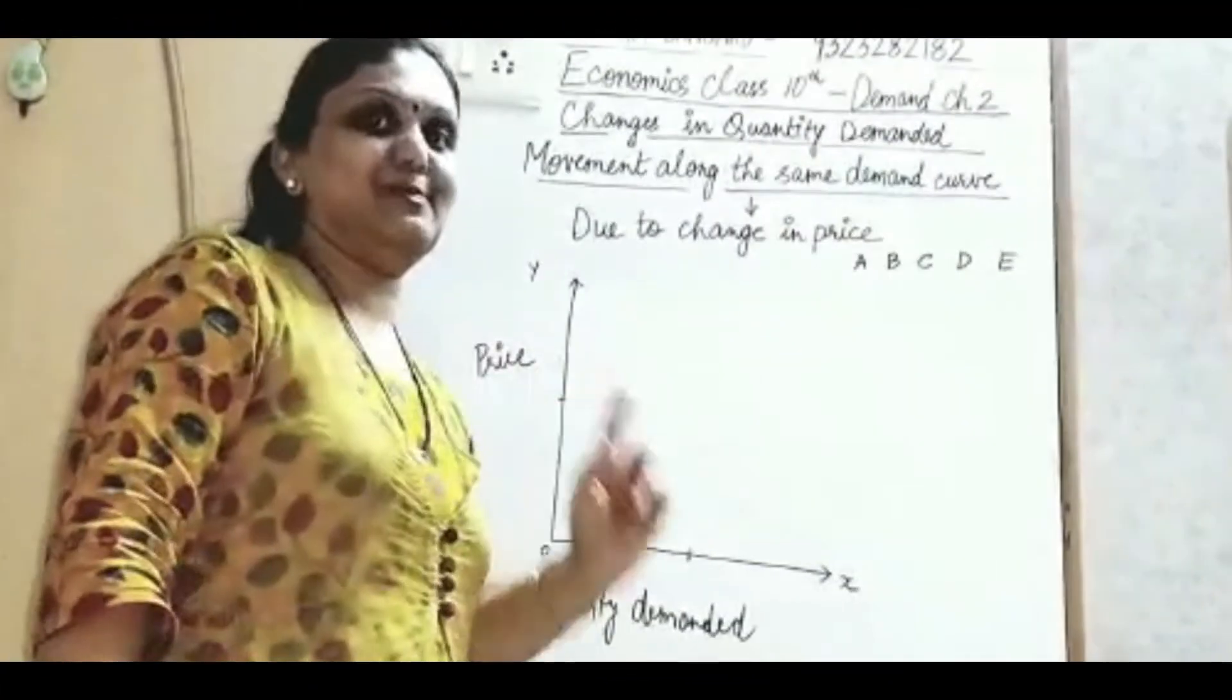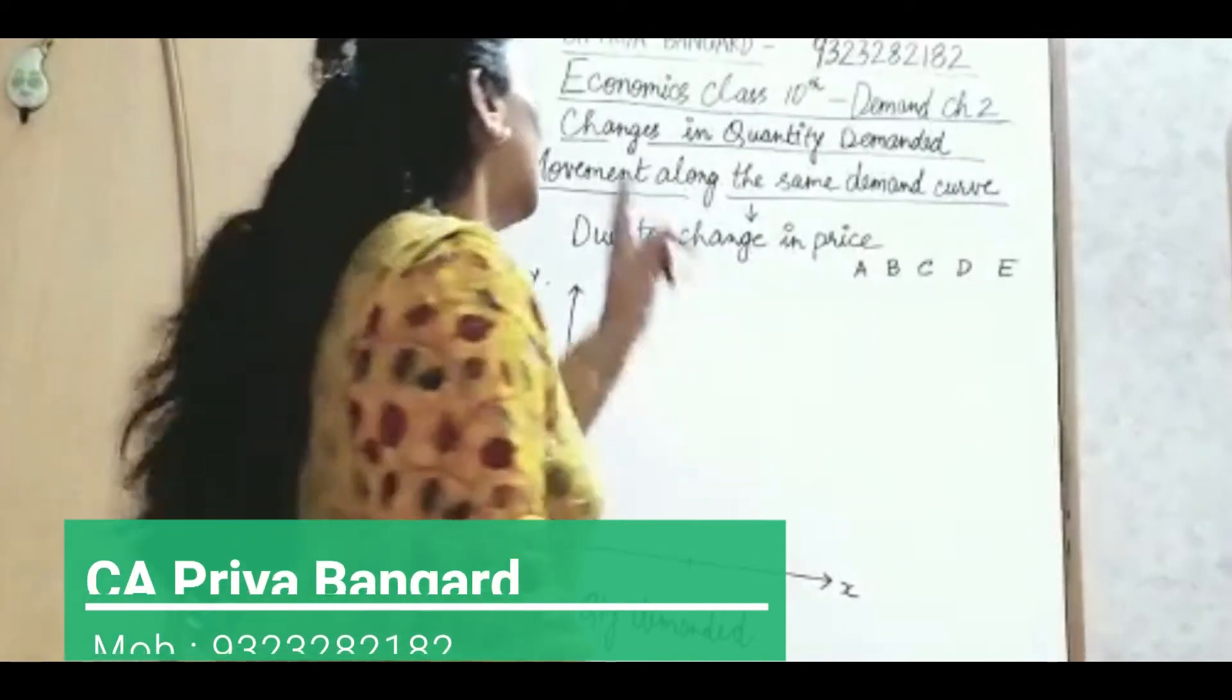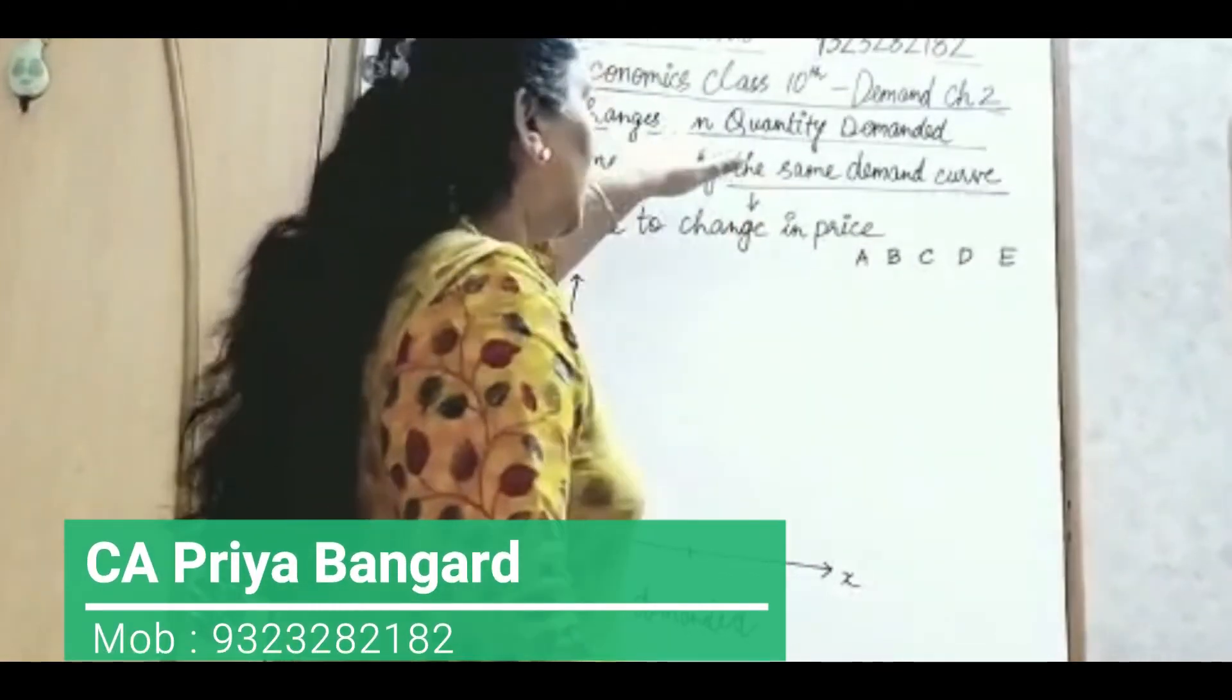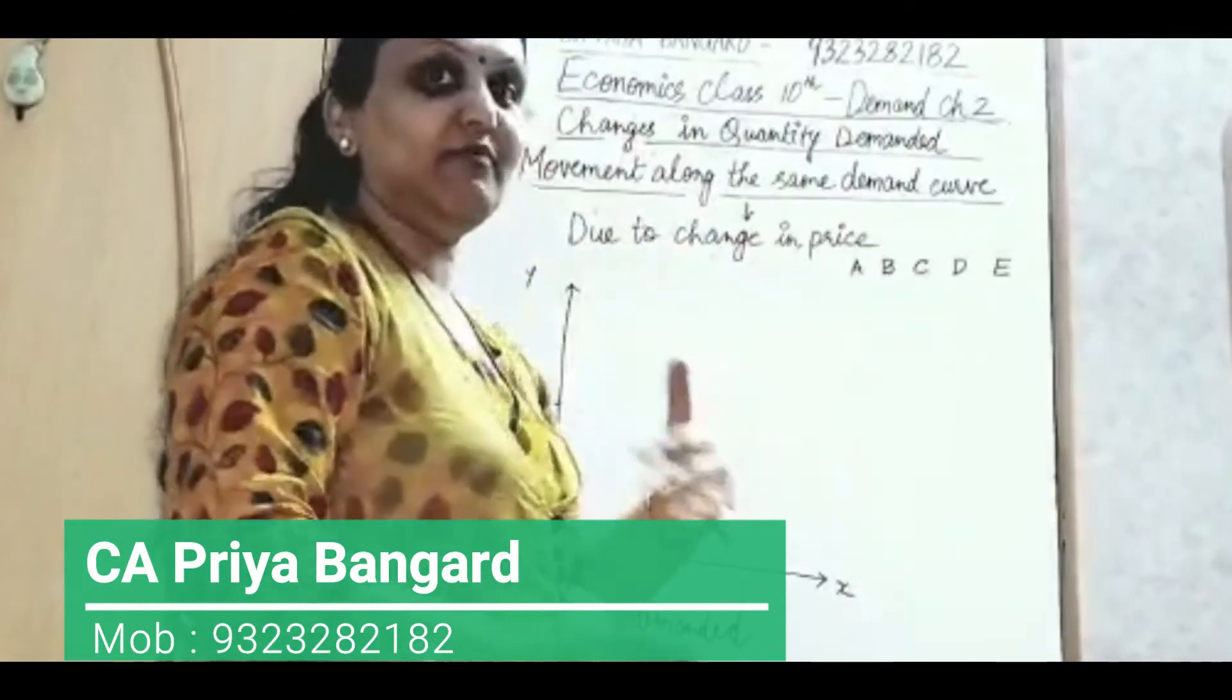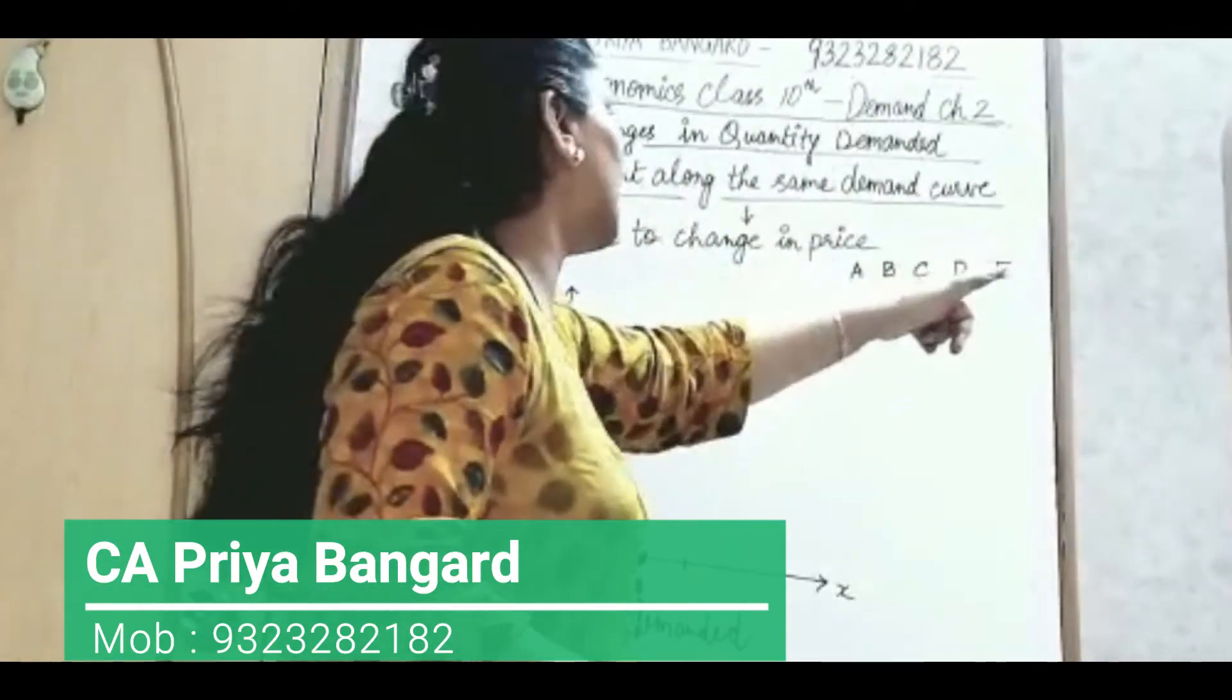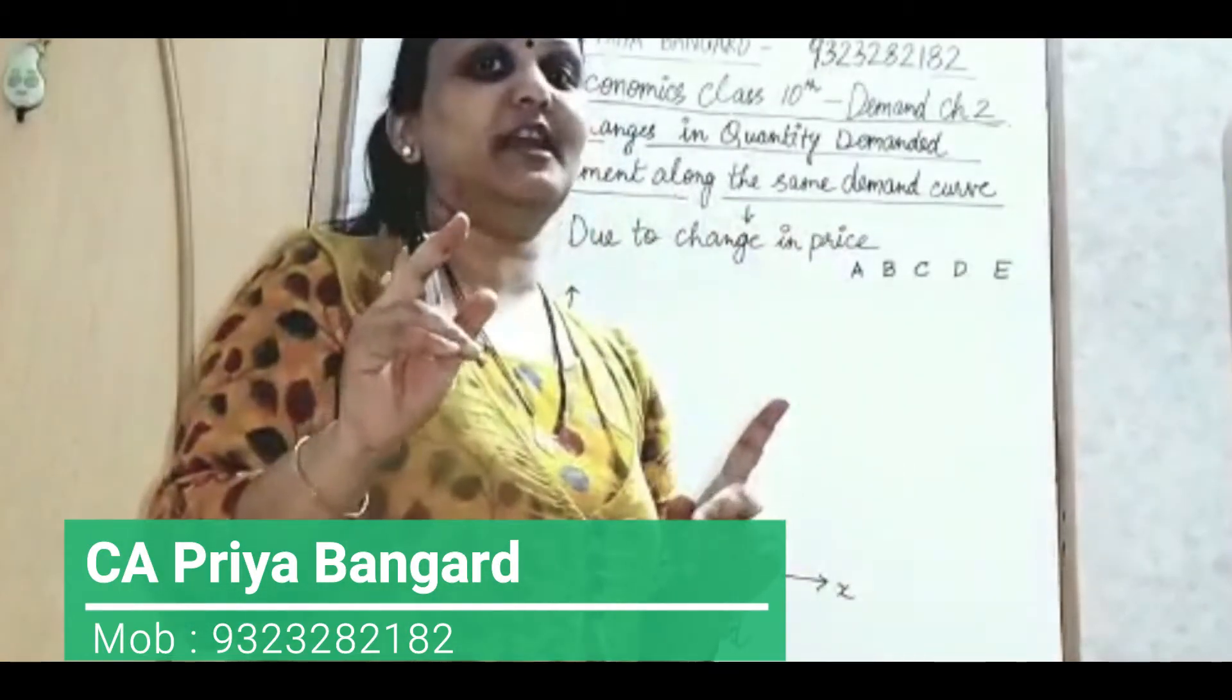Now I will be explaining you expansion and contraction together. So they are called as changes in quantity demanded or the other name we use movement along the same demand curve due to change in price, other things remaining equal.